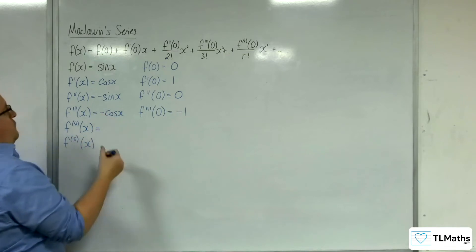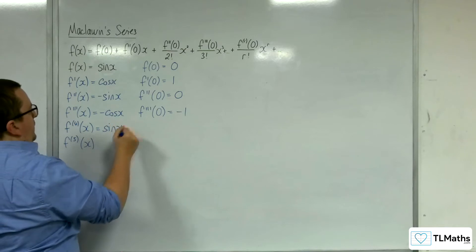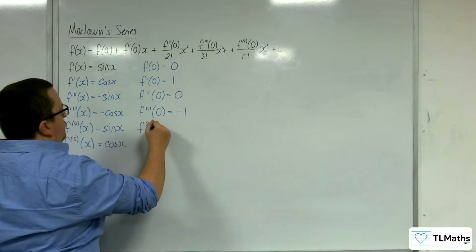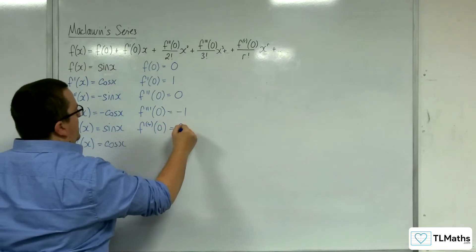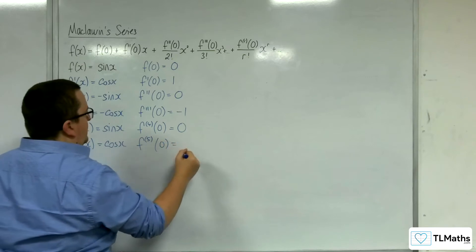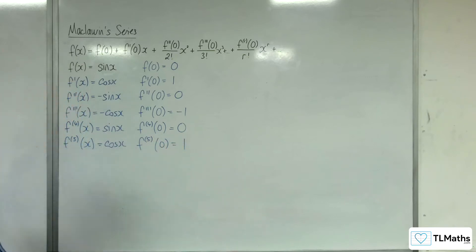So minus cosine x differentiates back to sine x. And the fifth derivative, we'll go back to cosine x. So the fourth derivative evaluated at zero is just going to be zero. And the fifth term evaluated at zero is going to be equal to one.